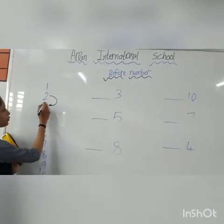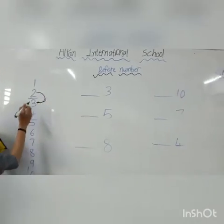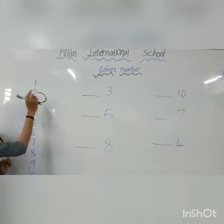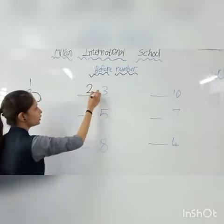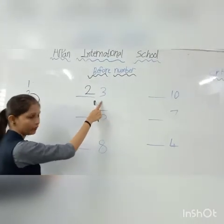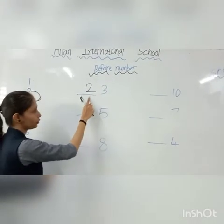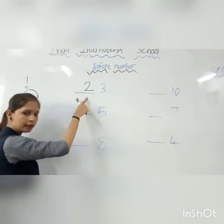What comes before 3? The answer is 2. 2 comes before 3.